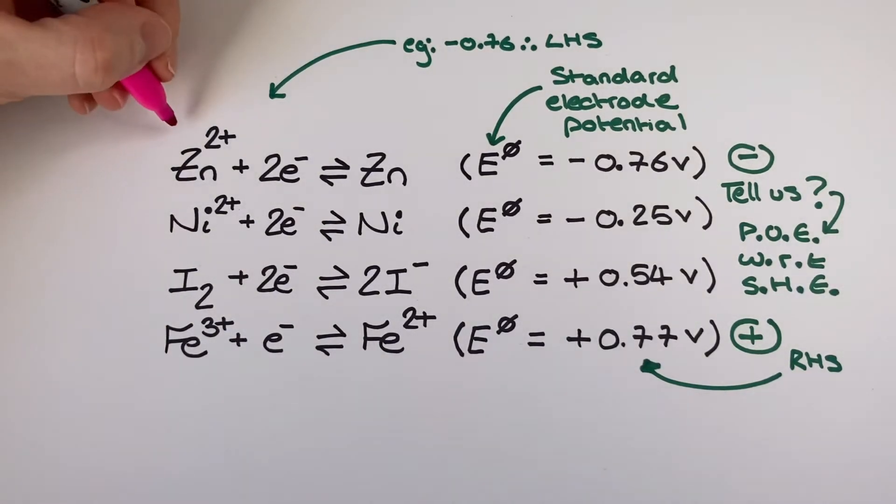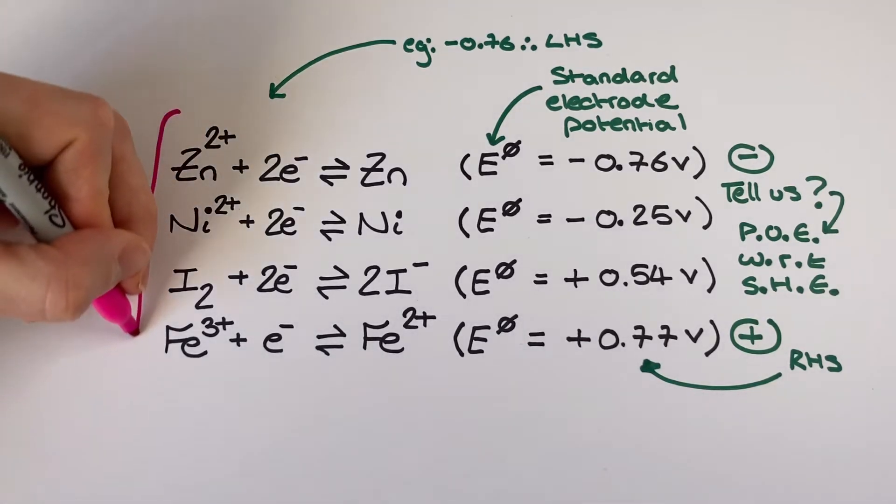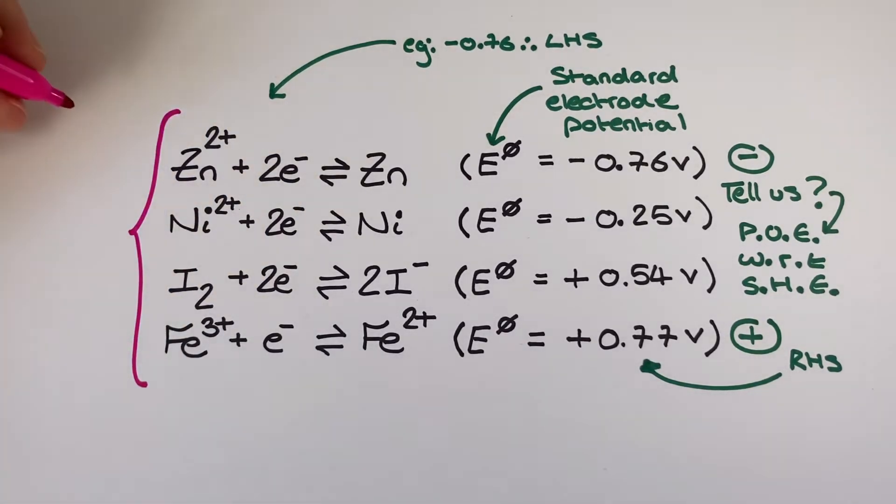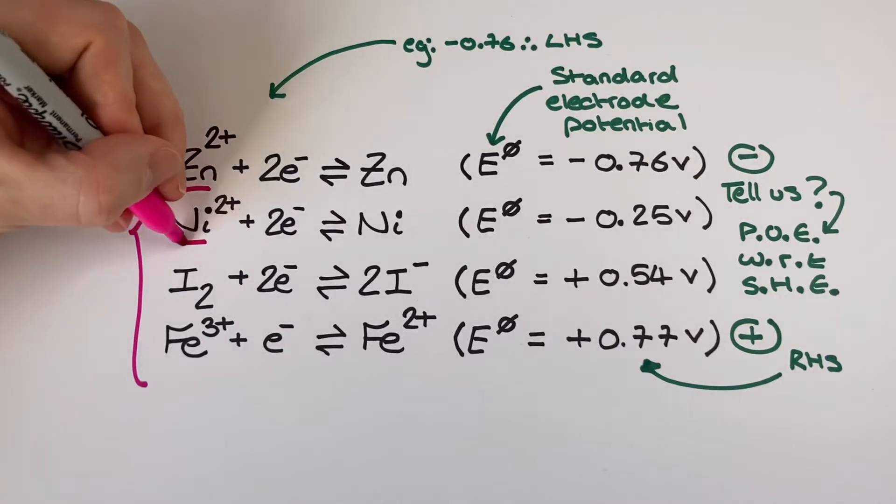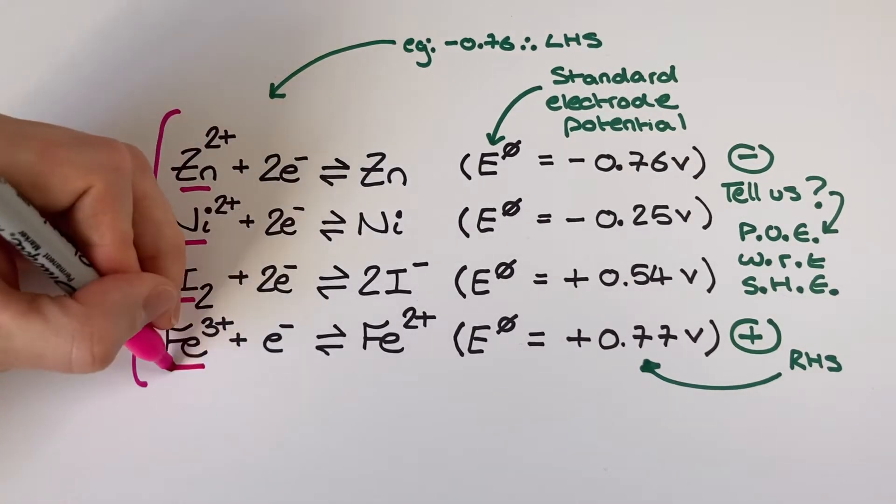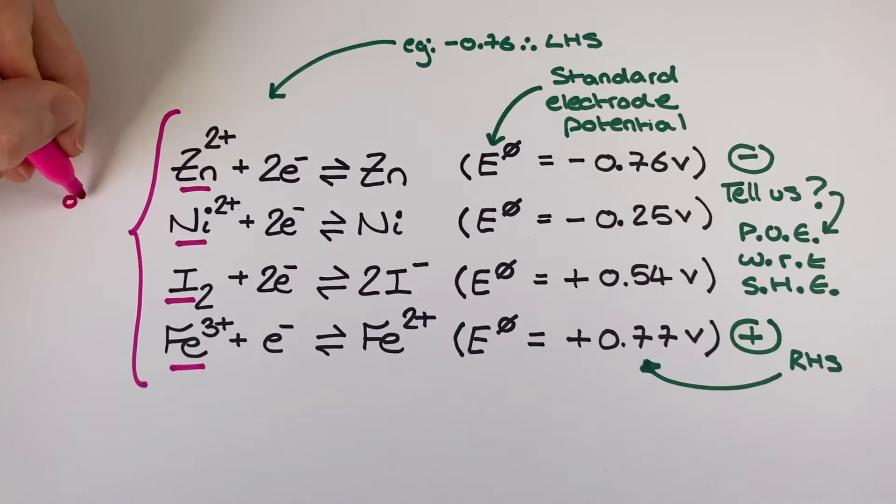Another use of the standard electrode potential values is helping me decipher which is my strongest oxidising agent and which is my strongest reducing agent in my little snapshot of this electrochemical series.